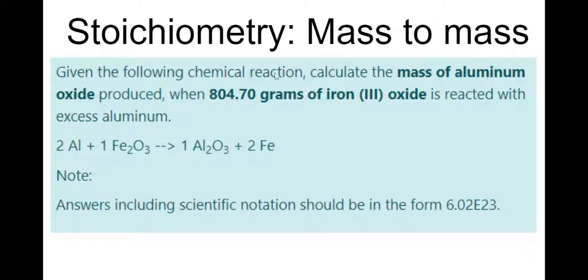So the example is, as you can read, given the following chemical reaction, calculate the mass of aluminum oxide produced when 804.7 grams of iron III oxide is reacted with excess aluminum. So we haven't talked about this much, but excess aluminum just means you're not going to have to worry about it. So what you want to key in on is this 804.70 grams of iron III oxide and what you're calculating, the mass of aluminum oxide.